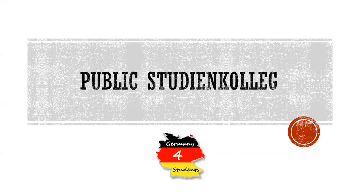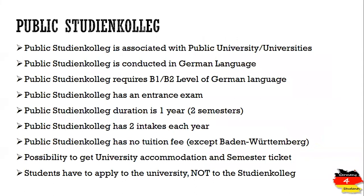There are two types of Studienkolleg: public and private. In this video we will discuss only the public Studienkolleg. Public Studienkolleg is associated with a public university. There is usually one Studienkolleg located in one particular state and all the universities in that state are associated with it. There are some states where there are multiple Studienkollegs, and there is one state, Nordrhein-Westfalen, where there is no public Studienkolleg and none of the universities offer any Studienkolleg for international students.